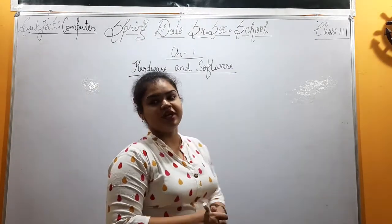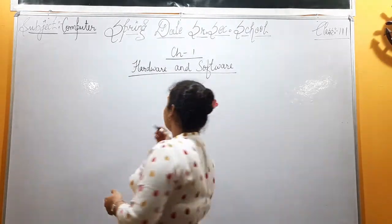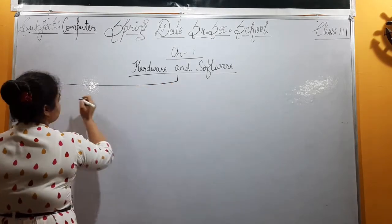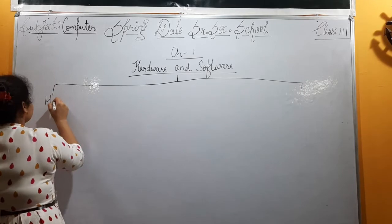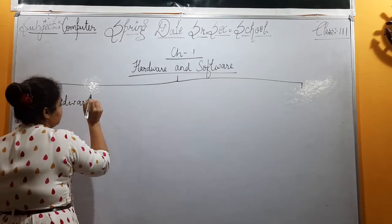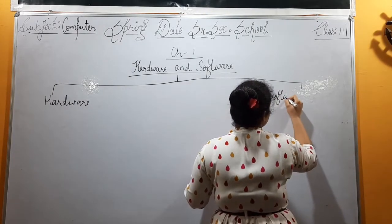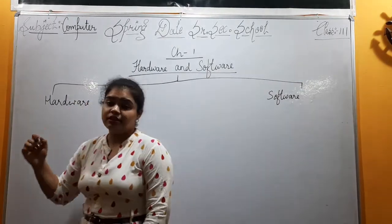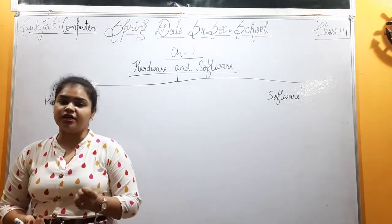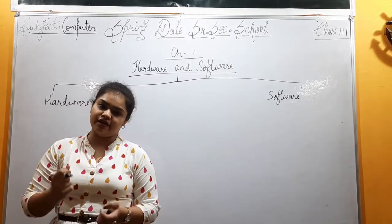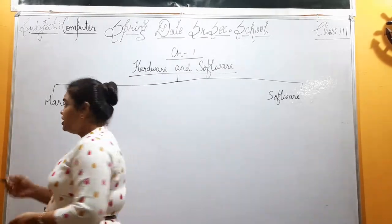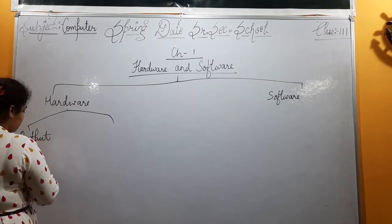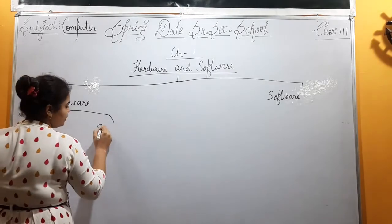Let's take a quick revision of what we have read. Computers have different parts — hardware and software. In hardware, the body parts of the computer that we can see are monitor, printer, speaker, and more. These are the output devices. We also have input devices.